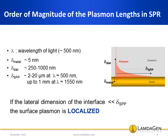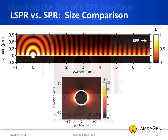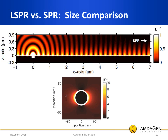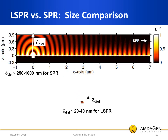If the lateral dimension of the interface becomes much smaller than the plasmon propagation length, the surface plasmon is localized. For example, in the case of a localized surface plasmon for a 20 nanometer silver particle, there is no traveling wave. There is a large increase of the electromagnetic field close to the particle surface, but it extends only a small distance out — hence the surface plasmon is localized. If we were to scale both images to their relative size, it is immediately apparent that the evanescent field of localized SPR is much shorter than that of regular SPR.